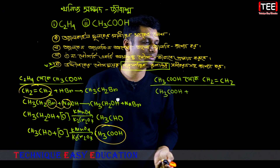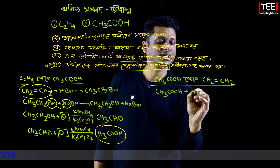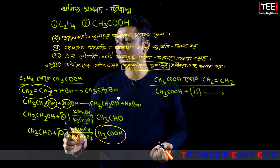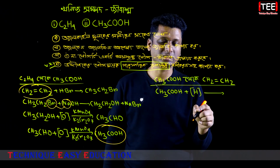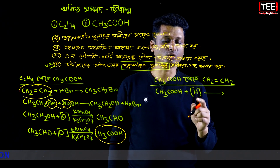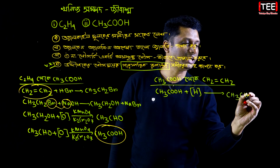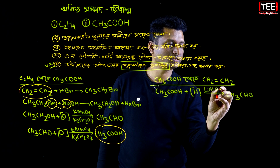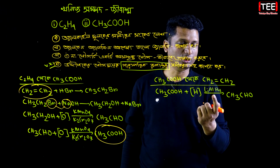CH₃COOH (acetic acid/ethanoic acid) is the product. The aldehyde and acid remain dissolved in this stage.